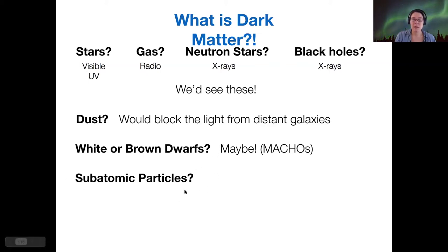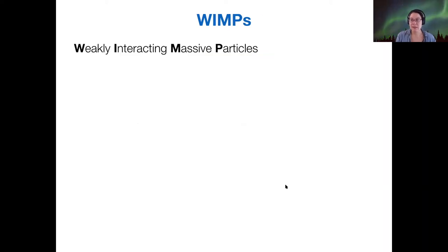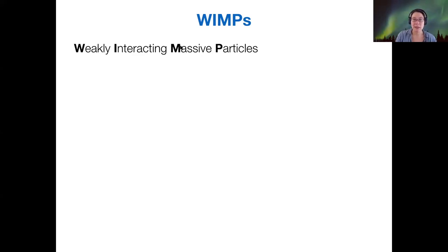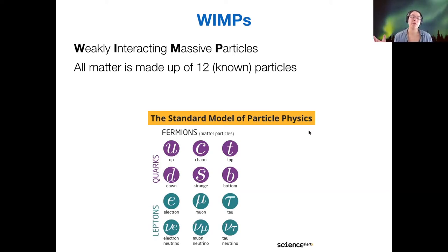The more exotic idea is that there's some sort of subatomic particle that we have not yet found that is out there in large quantity and accounts for dark matter. As opposed to MACHOs, these are called WIMPs — weakly interacting massive particles. We call them weakly interacting massive particles because we know they're massive since they contribute to what we see in our rotation curves, but they're weakly interacting, meaning that they don't interact with light. To understand what the candidate particles are, we have to turn to the standard model of particle physics.